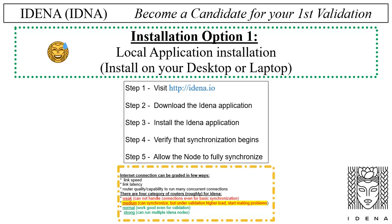Installation option 1, local application installation: install on your desktop or laptop. Step 1: visit http://idena.io. Step 2: download the IDENA application. Step 3: install the IDENA application. Step 4: verify that synchronization begins. Step 5: allow the node to fully synchronize. Let's see an example installation on a Windows computer.